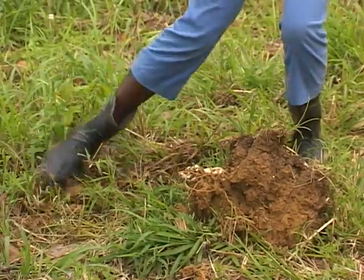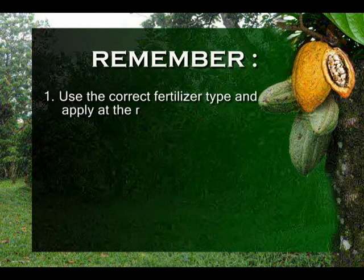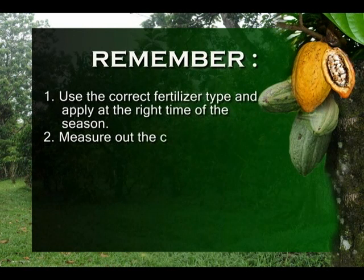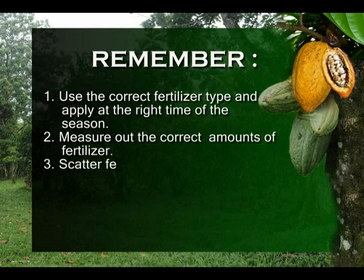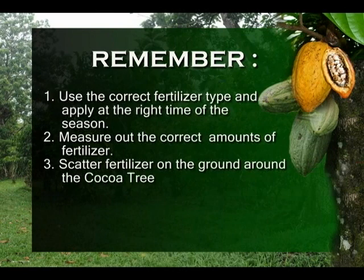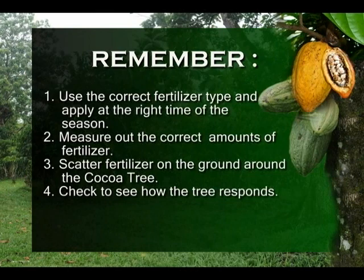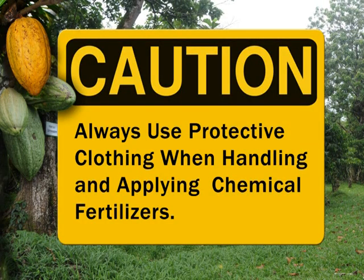Remember: use the correct fertilizer type and apply at the right time of the season. Measure out the correct amounts of fertilizer. Scatter fertilizer on the ground around the cocoa tree. Check to see how the tree responds. Importantly, always use protective clothing when handling and applying chemical fertilizers.